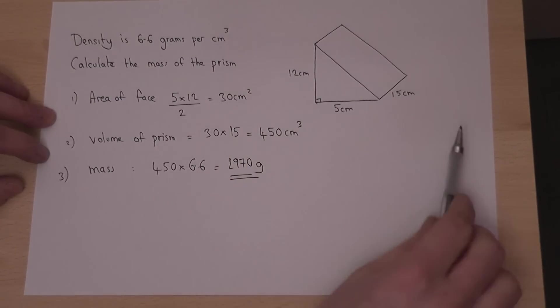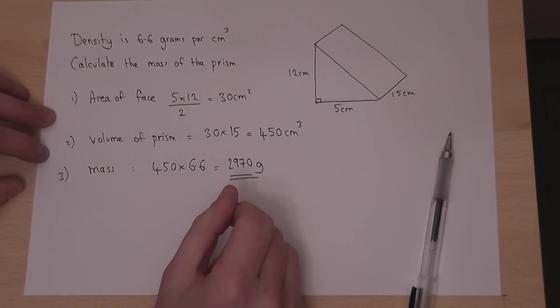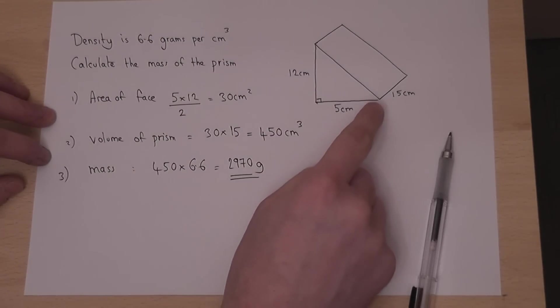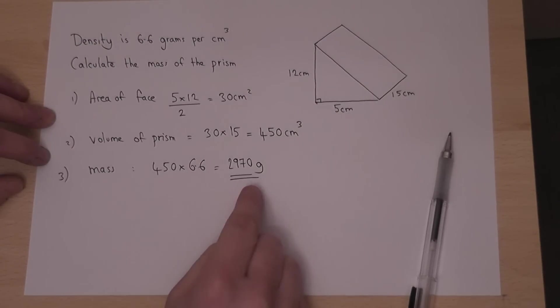So to summarise, to find a mass, we need the volume. The volume is the area of the face times the depth. Having got the volume, we then times by the density to get the mass.